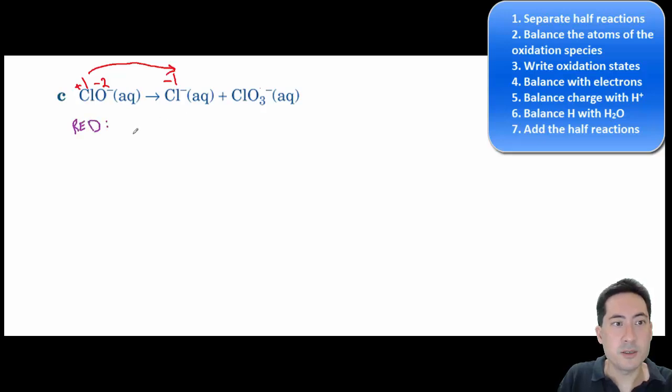So reduction here, we've got ClO minus goes to Cl minus. So the atoms are balanced, so that step's done.